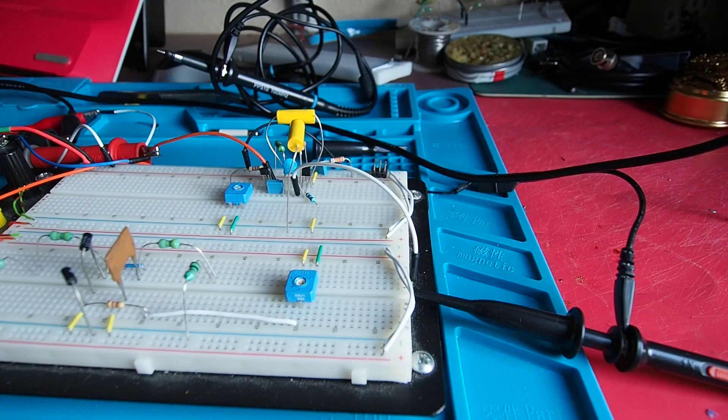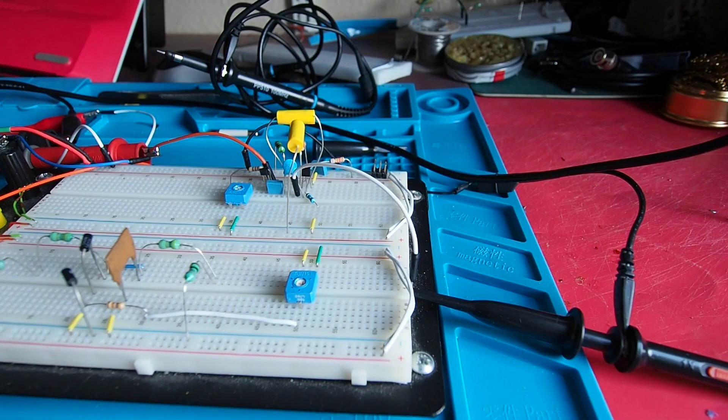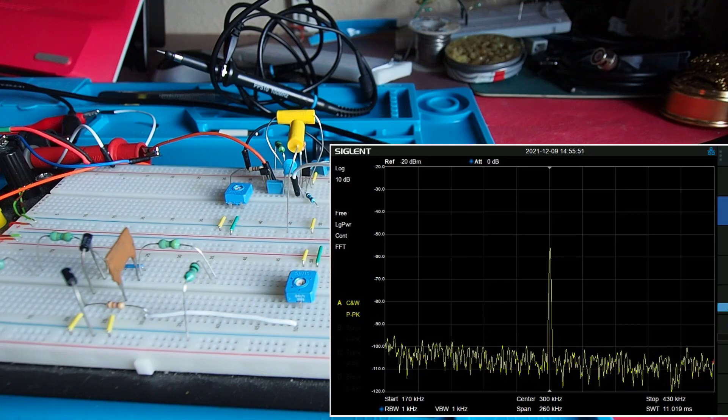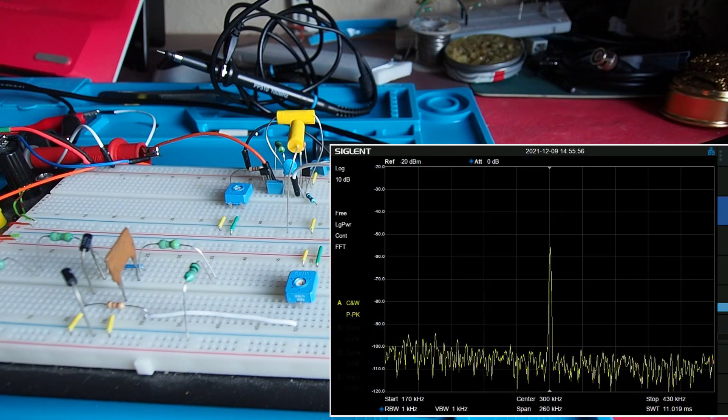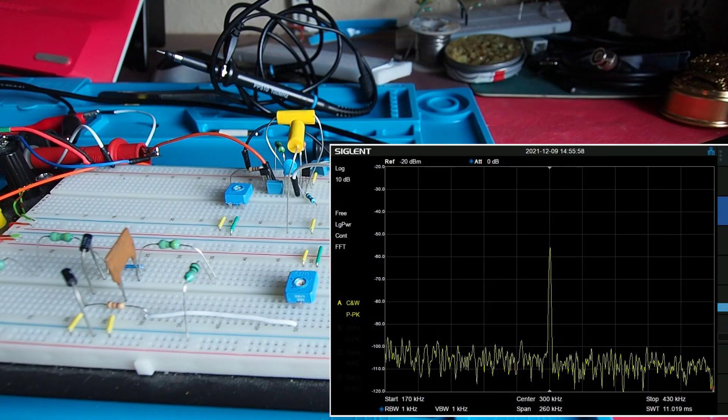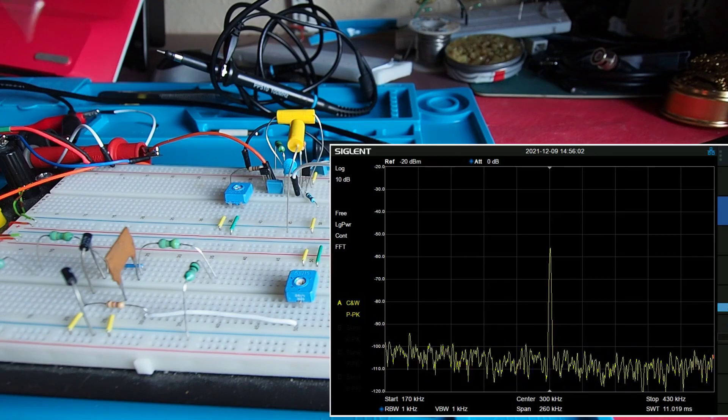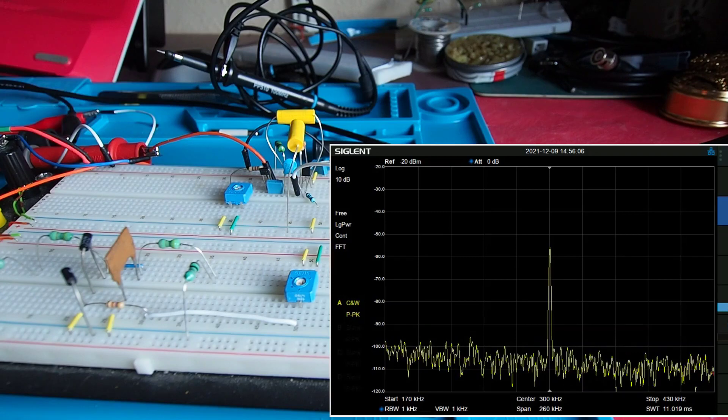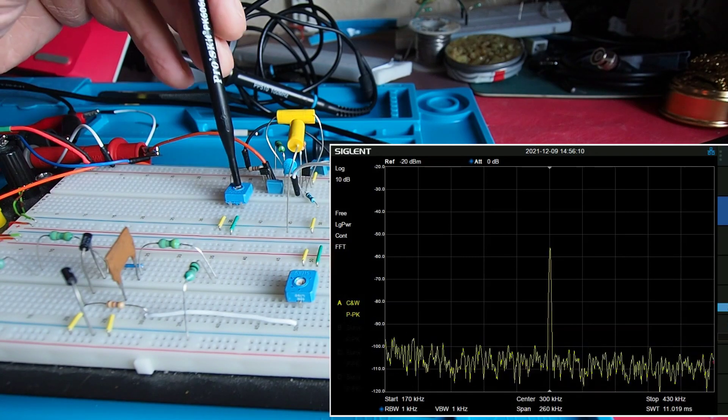Okay here's the voltage controlled oscillator laid out on the breadboard as described in the circuit diagram just now and there's the display from the spectrum analyzer and you can see we've got a strong signal in the center of the display centered around about 300 kilohertz at the moment and the bias voltage on the varactor is about 2.5 volts something like that.